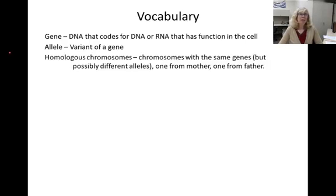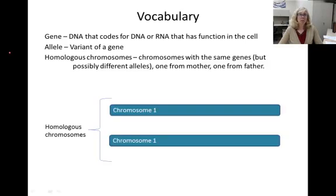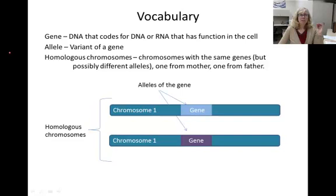Humans are diploid organisms, which means that they have two homologous chromosomes. Every chromosome has multiple genes on it. Every gene has two copies, one on each chromosome. And if one gene has a slightly different base pair sequence, it's considered a different allele of the gene.